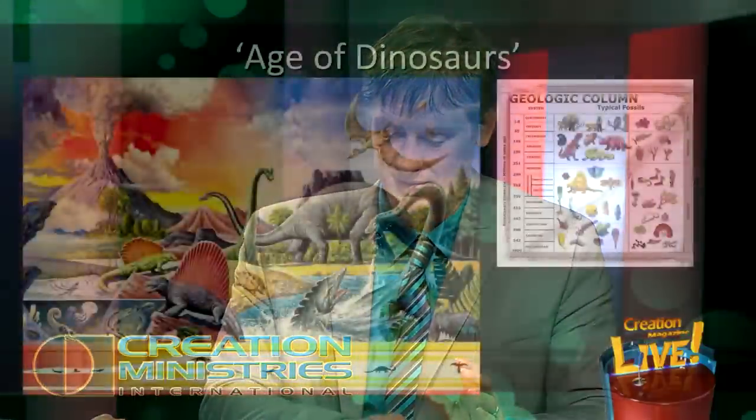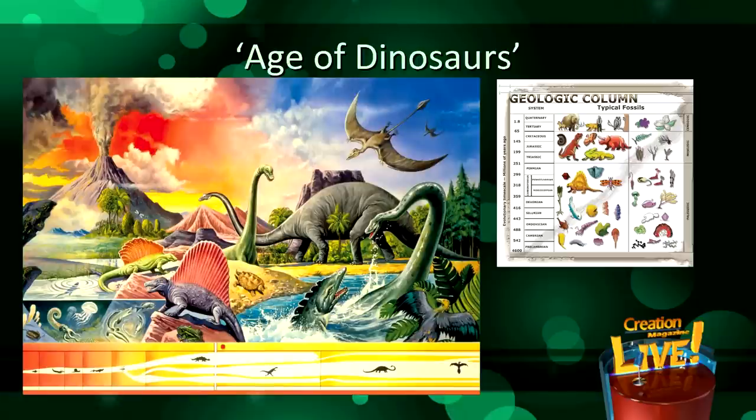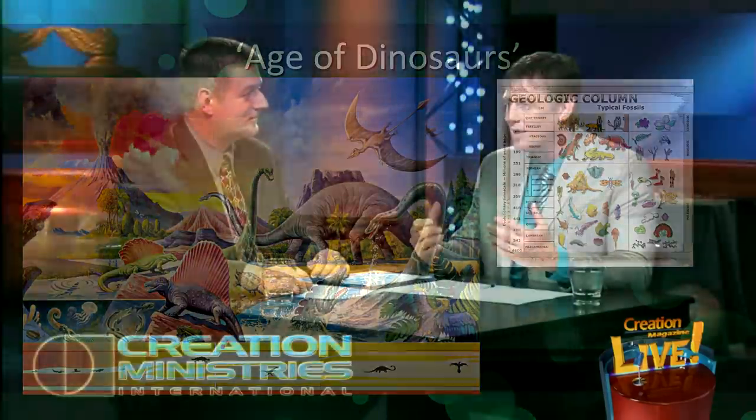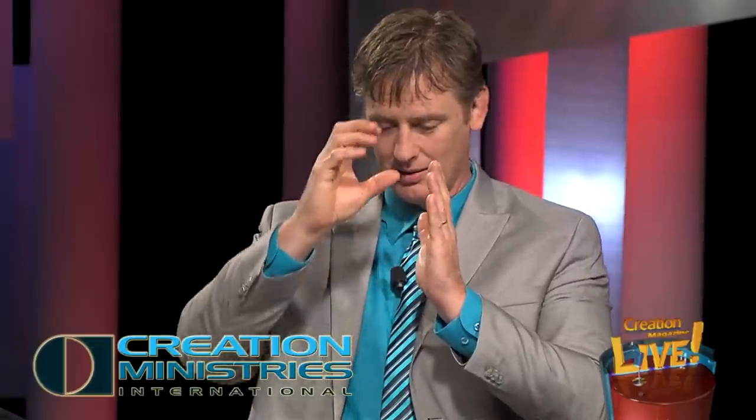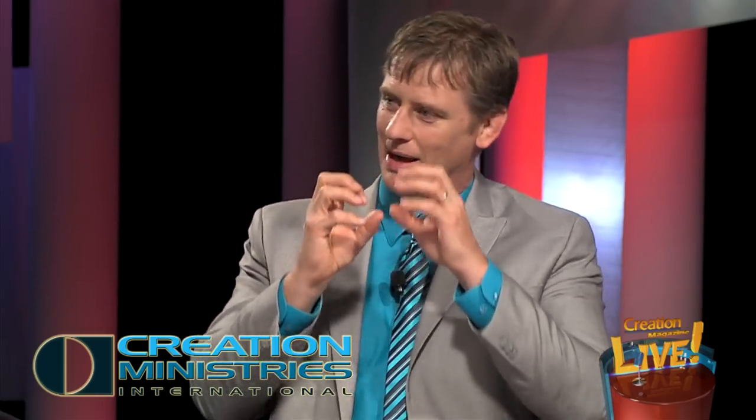It doesn't matter where CMI speakers go — we're practically guaranteed to be asked in a Q&A how dinosaurs fit in the Bible, the time sequence, when they existed, did they evolve? A classic evolutionary portrait of dinosaurs depicts them in a forest of exotic plants with other reptilian creatures, and if you do see a mammal it's usually some tiny shrew-like thing. They typically show a geologic column chart with supposed ages in time — sea life here, things growing out of the ocean, then dinosaurs, then mammals, then people. People have it in their head that this is a fixed sequence and we never find any mix-ups.